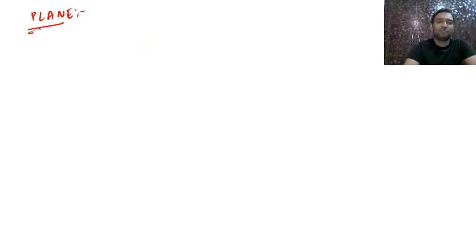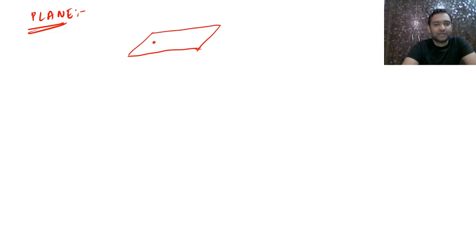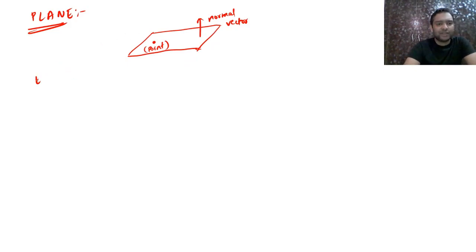Now we will cover the equation of a plane in various forms. To find the equation of a plane, we always need two things: a point on the plane, and a normal vector to the plane. With these two, you can find the equation of any plane.